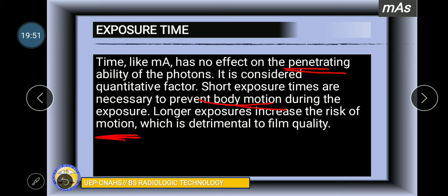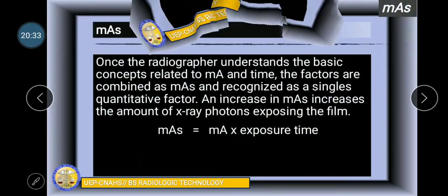Short exposure times are necessary to prevent body motion. Longer exposures increase the risk of motion which is detrimental to film quality. If there is movement, you are capturing an event and there's blurring, so the image has ghosts. We have to minimize our exposure time for better resolution and detail. One way the radtech prevents blurring is to suspend expiration.